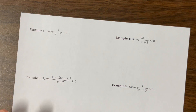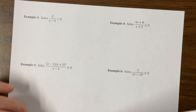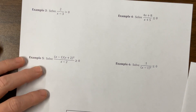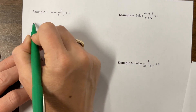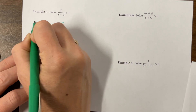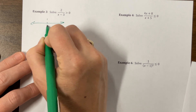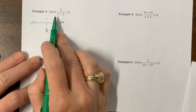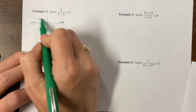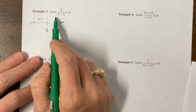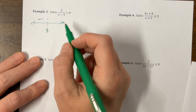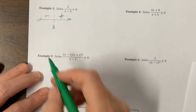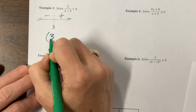On this next one, the only thing we care about is positive three. If I plug in zero, I get a negative. If I plug in four, I get a positive. So where am I greater than zero? From three to infinity.